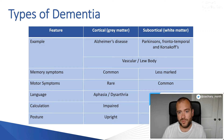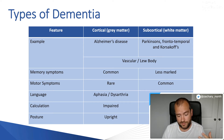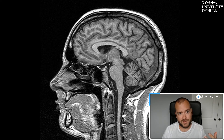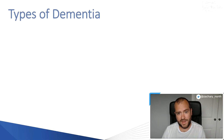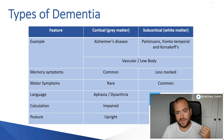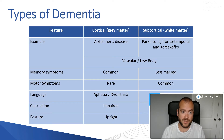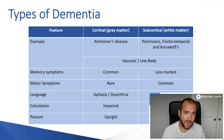Frontotemporal and Korsakoff's dementia are also subcortical. Frontotemporal dementia happens at the frontal part of the brain within the white matter, and patients typically have motor symptoms as well. Korsakoff's dementia, normally caused by alcohol abuse, also presents with motor problems and tremor becomes really apparent.